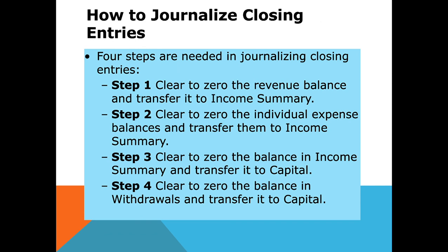Step two: clear to zero all individual expense balances and transfer them into income summary. Income summary is in your chart of accounts — it's a temporary account used during the closing procedure. Step three: clear to zero the balance in income summary and transfer it into capital. If you had net income, it increases capital; if you had a net loss, it decreases capital. So step three is not set in stone. Step four: zero out the balance in withdrawals and transfer it to capital.